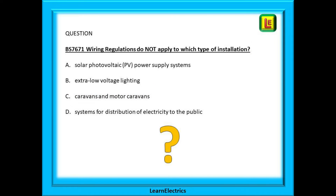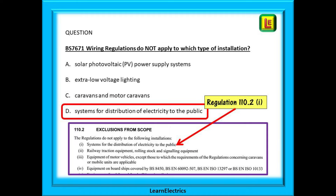Here's a typical question: 'BS 7671 wiring regulations do not apply to which type of installation?' The choices are: solar photovoltaic (PV) power supply systems, extra low voltage lighting, caravans and motor caravans, and systems for distribution of electricity to the public. This is a 'not' question. Looking on page 16 at regulation 110.2, exclusions from the scope, we find answer D — systems for distribution of electricity to the public. The other three options are all included in the scope of the regulations on page 15.